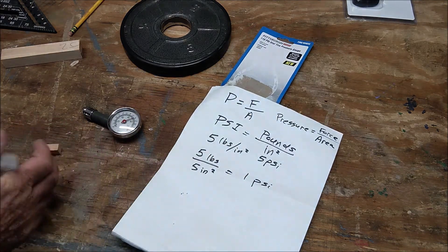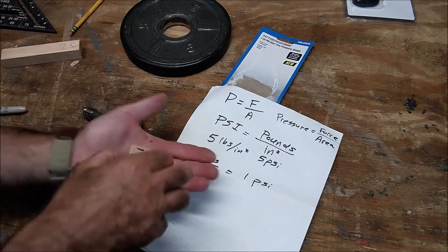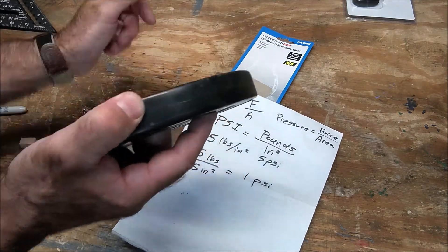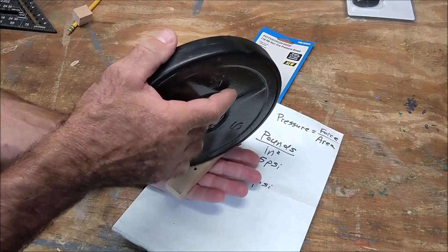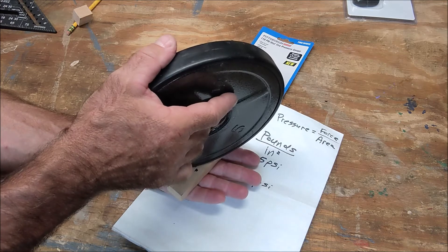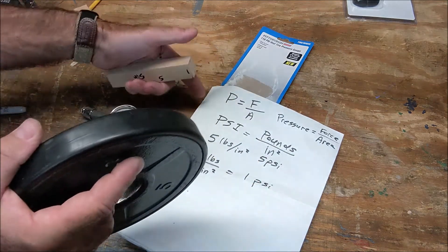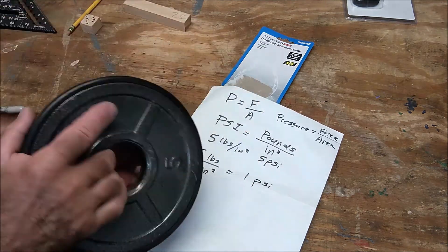So in this scenario there's five psi on my hand in this scenario there's less pressure there's only one psi on my hand and I could feel the difference. So again pressure is pounds over square inch.